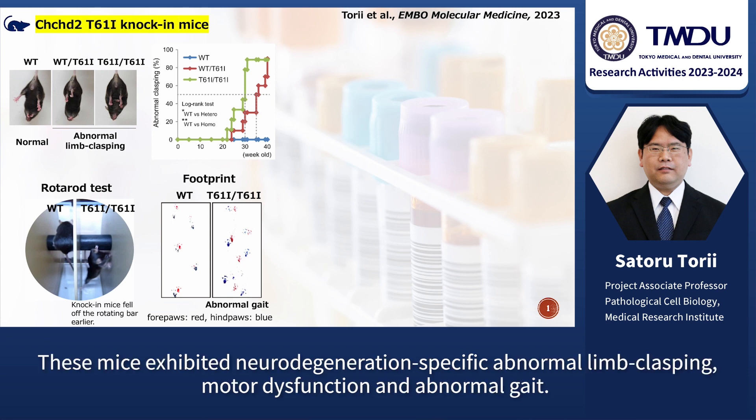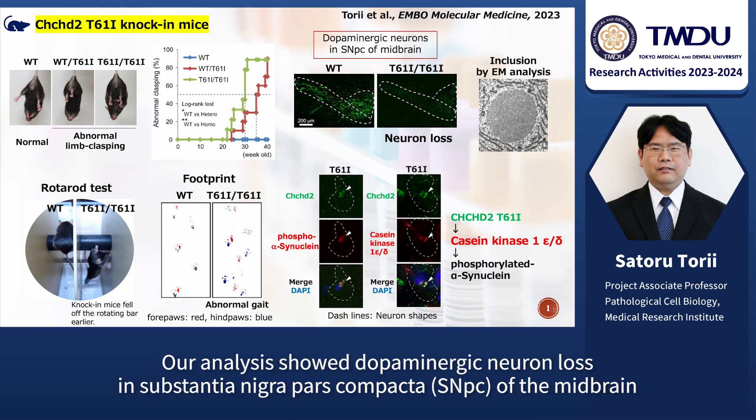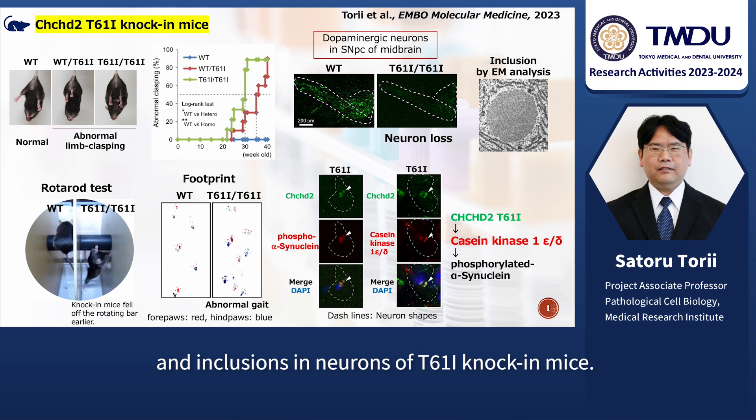These mice exhibited neurodegeneration-specific abnormal limb clasping, motor dysfunction, and abnormal gait. Our analysis showed dopaminergic neuron loss in the substantia nigra pars compacta (SNpc) of the midbrain and inclusions in neurons of T61I knock-in mice.